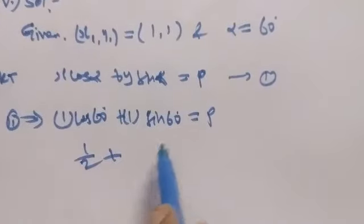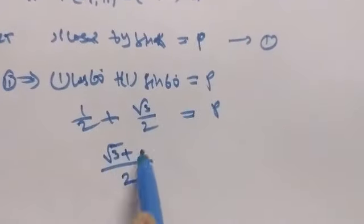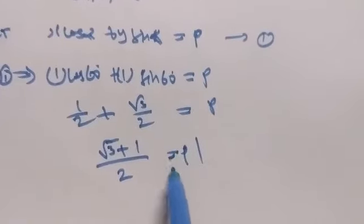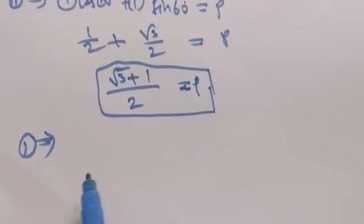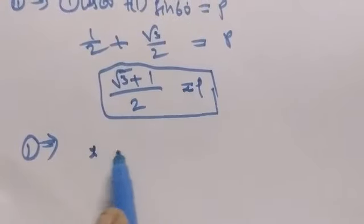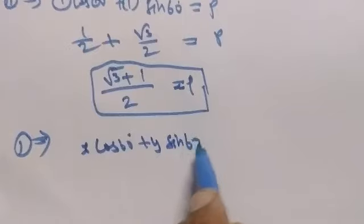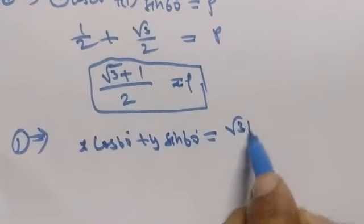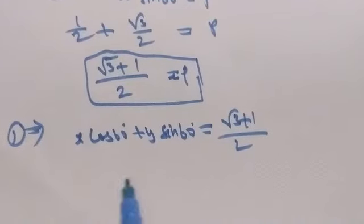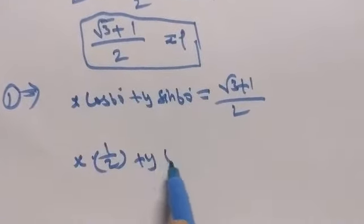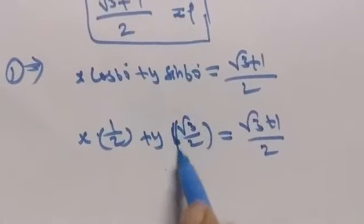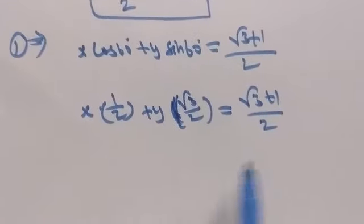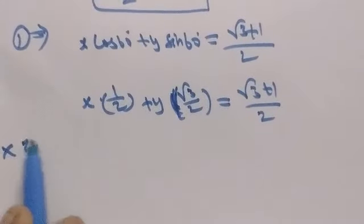Cos 60 is 1/2, sin 60 is √3/2, so 1/2 plus √3/2 equal to p. Adding numerators: (1 + √3)/2 equal to p. Therefore, x cos 60 plus y sin 60 equals (√3 + 1)/2. Multiplying both sides by 2.